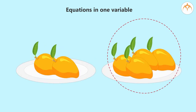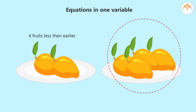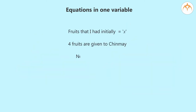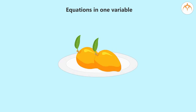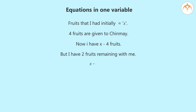I gave four fruits to Chinmay, so I have four fruits less than what I had earlier. We can say that now I have X minus 4 fruits. From the information given, I have two fruits remaining, so it means X minus 4 equals 2. If we add 4 to both sides, we get X minus 4 plus 4 equals 2 plus 4, that is X equals 6.